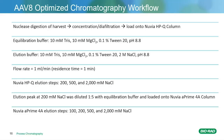This is showing the AAV8 optimized chromatography workflow. You'll have your digestion, concentration, dye filtration, and load onto the Nuvia HPQ column. The buffers are 10 mM Tris with magnesium chloride and Tween at pH 8.8. Those were added to prevent binding to the tubing containers and the results were similar to the initial screening. The elution buffer has the 2 M salt with those gradients. The flow rate is 1 mL per minute for a residence time of 1 minute. The HPQ elution steps were at 200, 500, and then the 2 M steps. The 200 mM elution peak was then diluted 1 to 5 with the equilibration buffer and loaded onto the Nuvia A'4A column. The A'4A elution steps were the same as the initial screening of 100, 200, 500 mM, and then the 2 M salt strip.